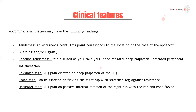The Rovsing sign is pain elicited in the right lower quadrant when we deep palpate the left lower quadrant. This is because the parietal peritoneum is continuous — think of it like cling wrap. When you press on the left, it tenses the entire peritoneum, causing the right lower quadrant peritoneum to move as well, eliciting pain. The psoas sign is pain elicited on flexing the right hip with the stretched leg against resistance. The obturator sign is right lower quadrant pain on passive internal rotation of the right hip. These last two are not very commonly performed but good to know for examinations.